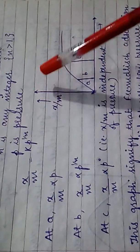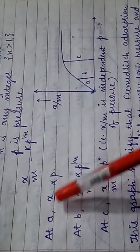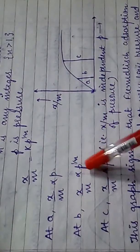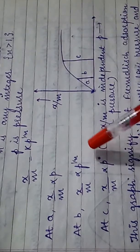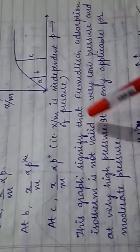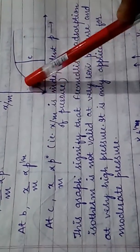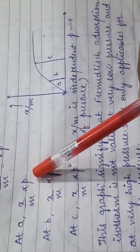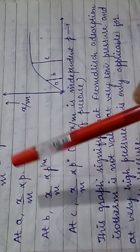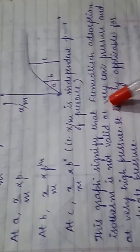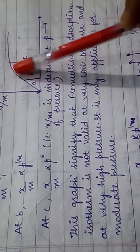Here is the graph, which has three portions: A, B, and C. This graph is plotted between x/m and pressure. At A, x/m is directly proportional to P. At B, x/m is directly proportional to P^(1/n). At C, x/m is independent of pressure, i.e., proportional to P^0. This graph signifies that Freundlich's adsorption isotherm is not valid at low pressure (portion A, where x/m ∝ P) and not valid at very high pressure (portion C), but is valid and applicable for moderate pressure, i.e., portion B.